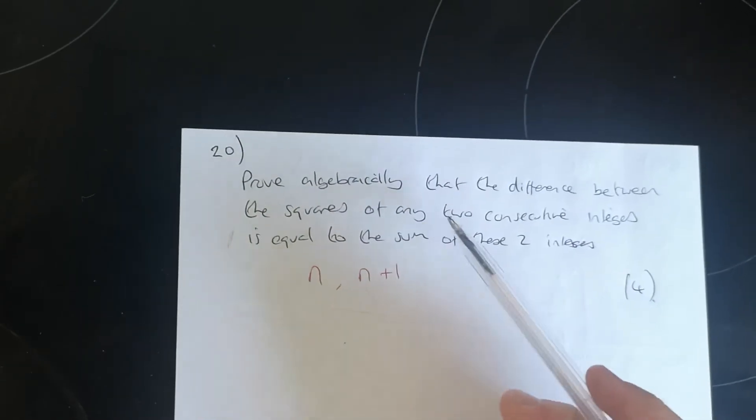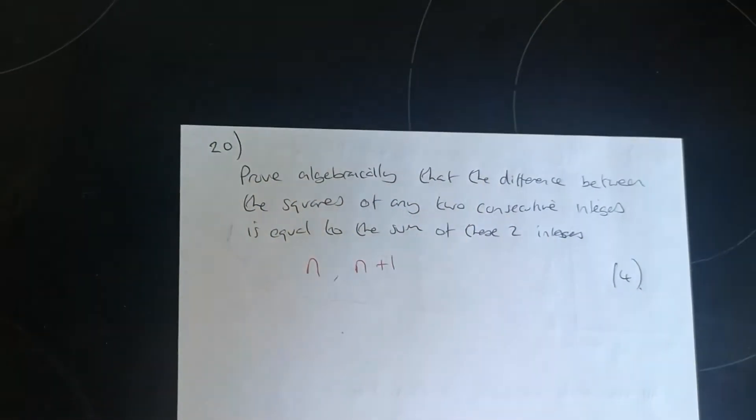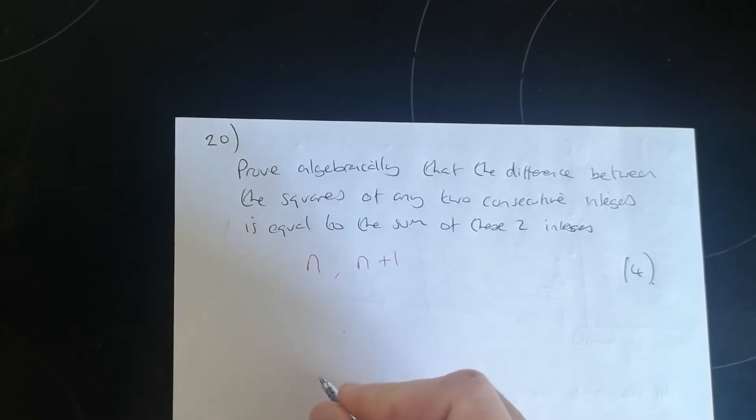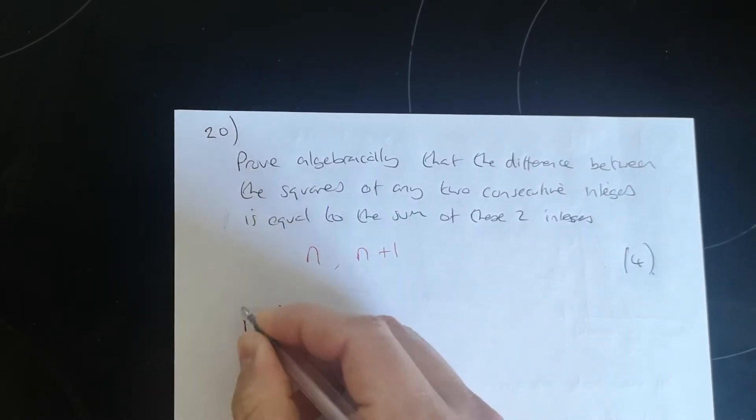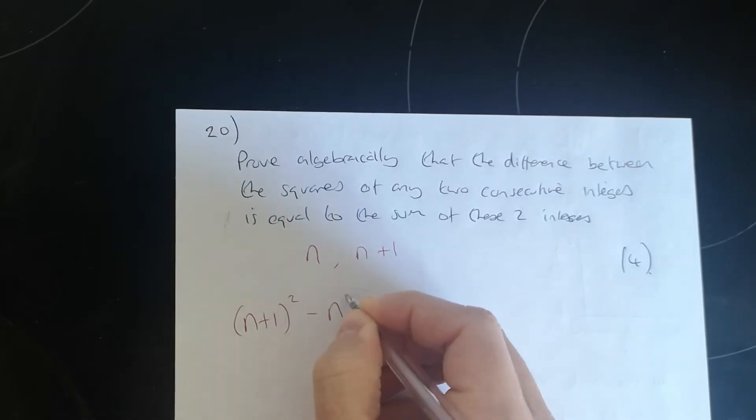The difference between the squares of any two consecutive integers. So we're going to work out the squares of these and the difference between them. So let's do n plus 1 squared minus n squared.